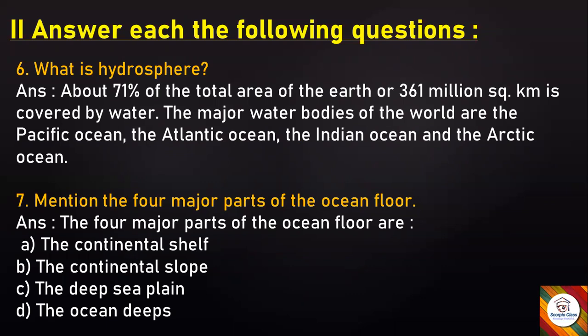Mention the four major parts of the ocean floor. Answer: The four major parts of the ocean floor are the continental shelf, the continental slope, the deep sea plain, and the ocean deeps.